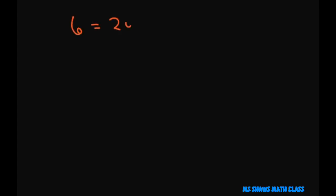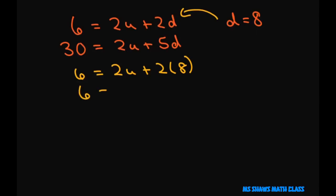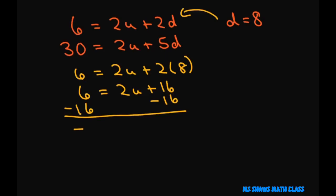We had 6 equals 2u plus 2d and 30 equals 2u plus 5d. Our d equals 8, so plugging into the first equation: 6 equals 2u plus 2 times 8, which gives 6 equals 2u plus 16. Subtracting 16 from both sides gives negative 10 equals 2u, and dividing by 2 gives u equals negative 5.